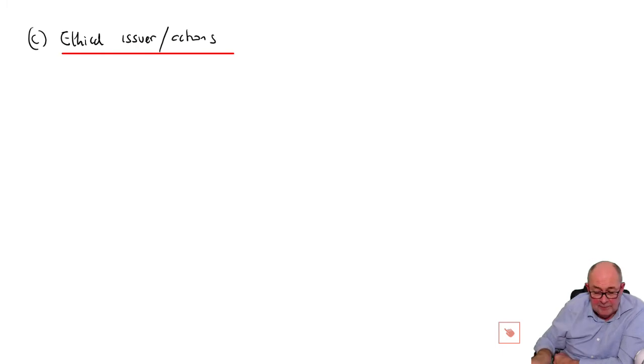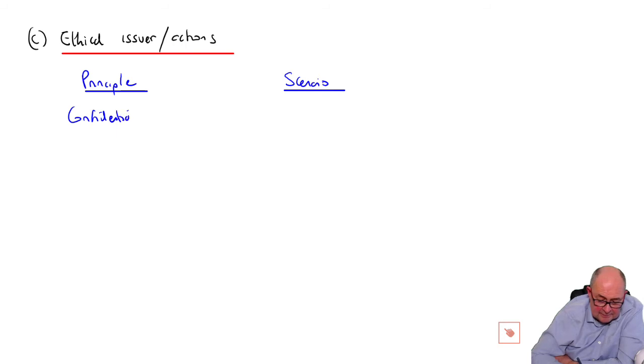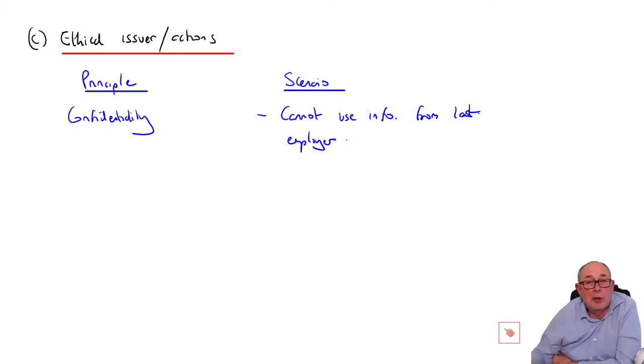So I wouldn't actually do this in columns. I'm just using it for a bit of planning and just saying, let's think about how we link the two together in your answer. So there's a principle on the left, on the scenario, on the right. So we've certainly got confidentiality. Confidentiality, key thing, isn't it, that you cannot use information from the last employer. Cannot use it at all, in fact, but also you cannot use it to your advantage. So that's an issue for Miss Pleasant, Miss P.